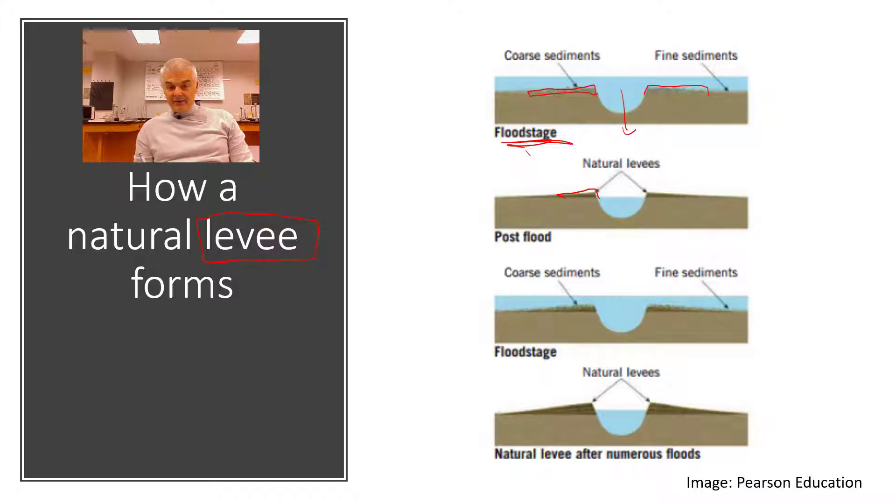Then it floods again and more coarse sediments. You see how the natural levee, it's natural. This happens on a natural basis. After many floods, you're going to get steeper banks of your river. That's how a natural levee forms.